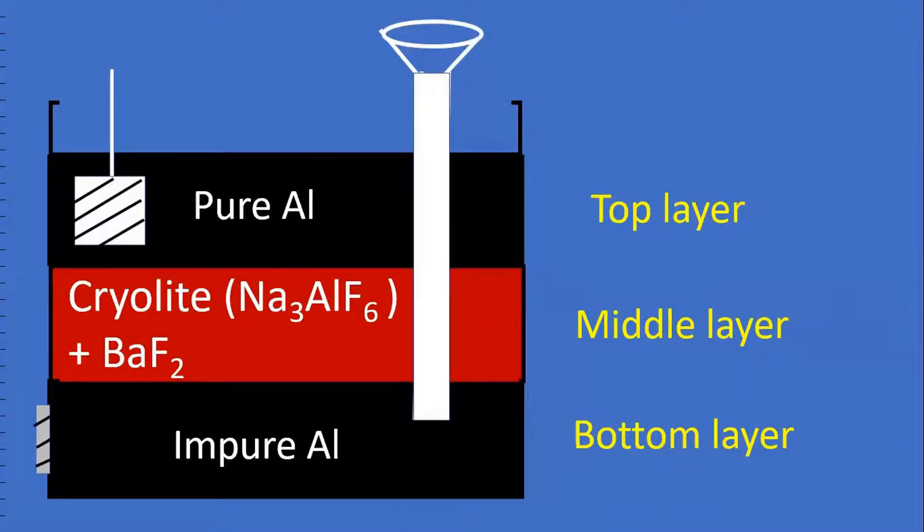The top layer is composed of pure aluminum metal, which is in the fused stage. A small amount of pure aluminum is already present.